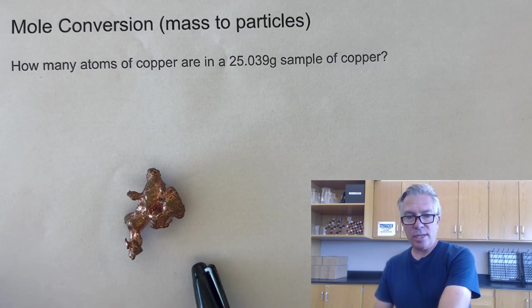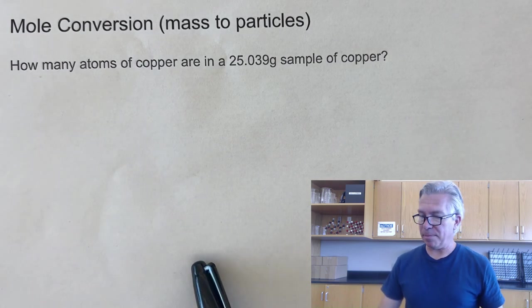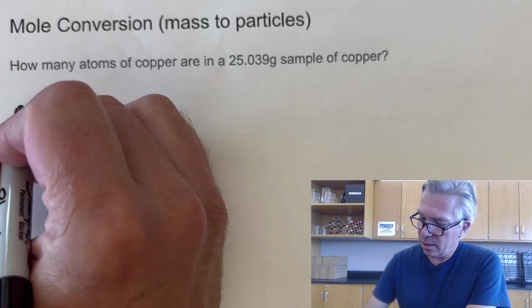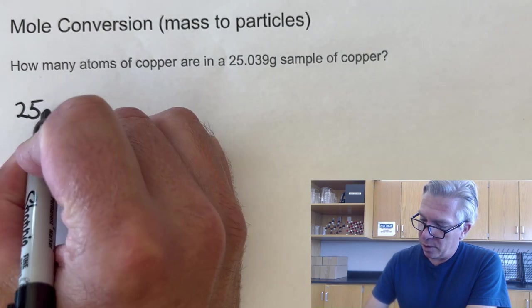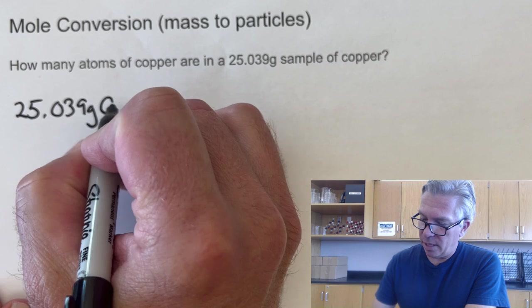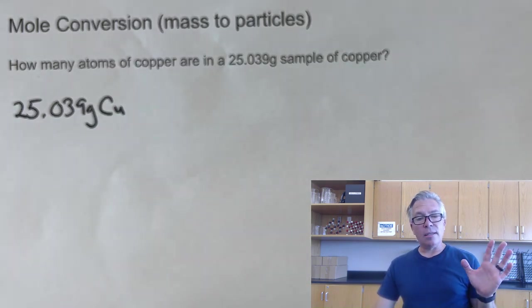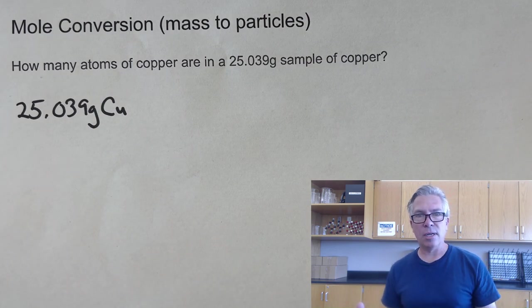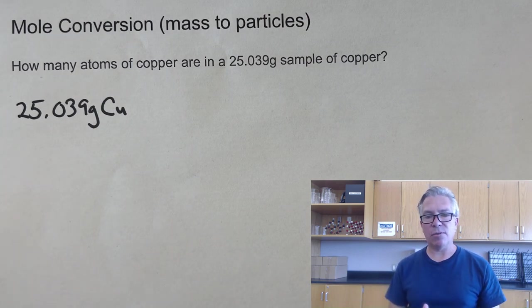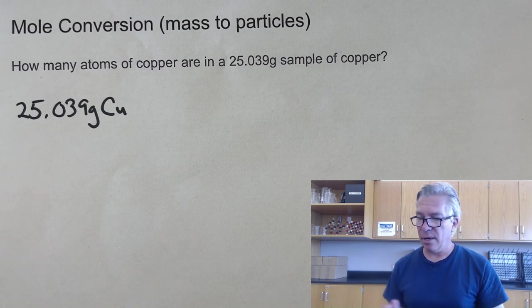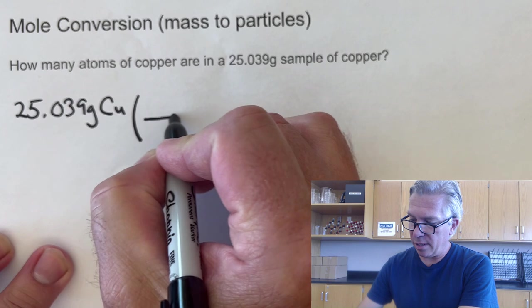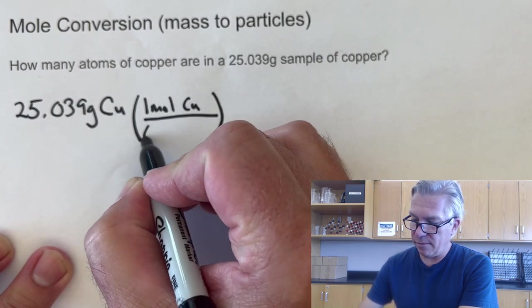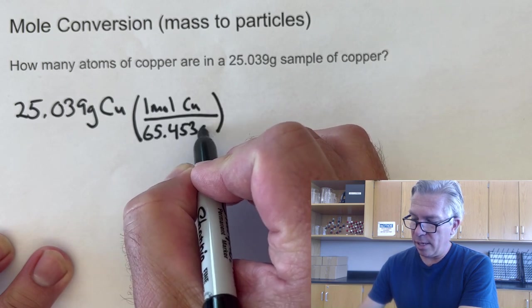Luckily for us, we have a way to calculate that without much effort. And so what we're going to be doing is starting with the 25 grams that we have, 25.039 grams, and make sure to note that it's copper. And what we know as chemists is that we can take a mass like this, and we can't go directly into particles, but we have to figure out first how many moles of particles that we actually have. And we're going to do it just like the way we did it in some of our other videos. And we're going to say, alright, one mole of copper is 65.453 grams of copper.